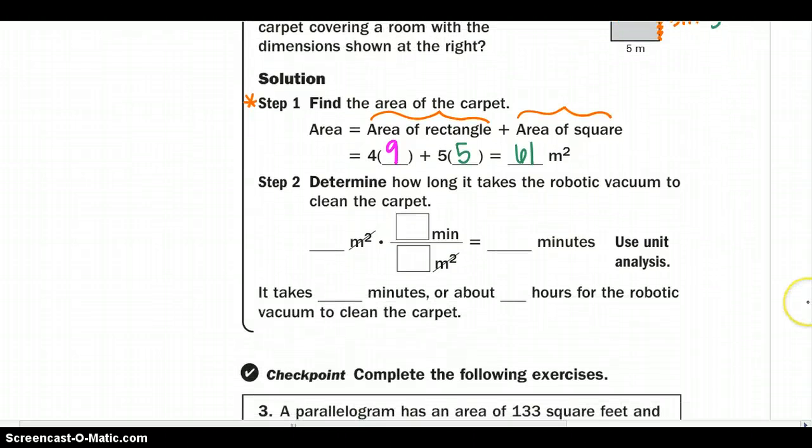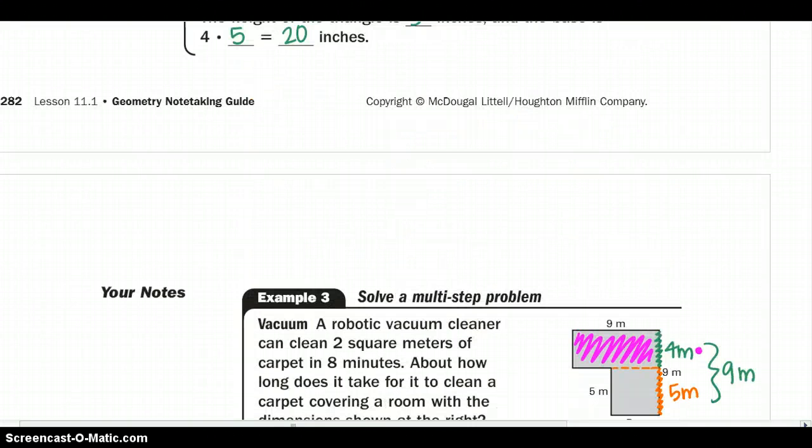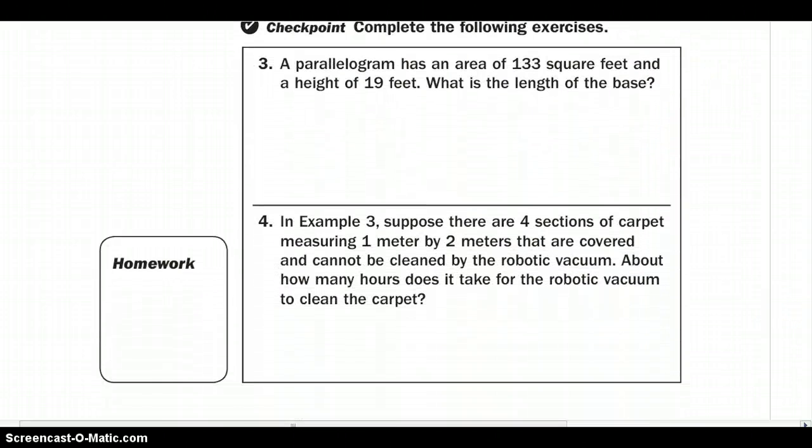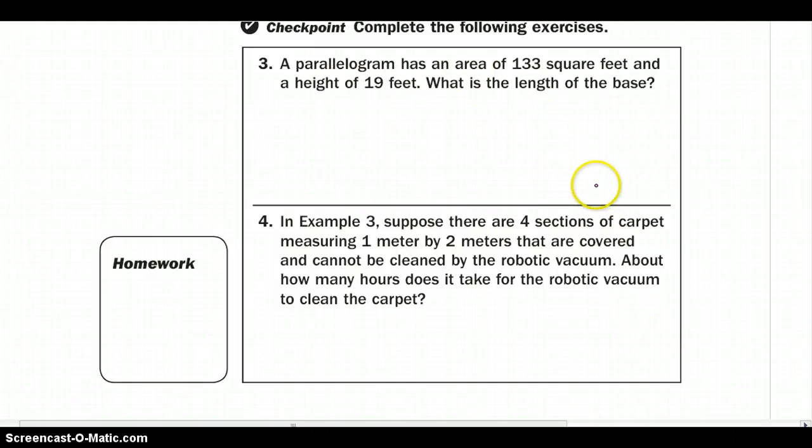Determine how long it will take the robotic vacuum to clean the carpet. So I'm going to take 61 meters squared, what I got up here in step 1, equals how many I have? I have 2 square meters in 8 minutes. So I know I need my meters to cancel, so I need to put my meters on the bottom, and I can clean in 8 minutes. So how long will it take? I'm going to do my top divided by my bottom, and I would get 244 minutes, which would be 4 hours. Go ahead and do your checkpoints 3 and 4. Your answers will be 7 feet in about 3.5 hours. If you have any other questions, feel free to ask at a later date. Have a great time doing your homework.